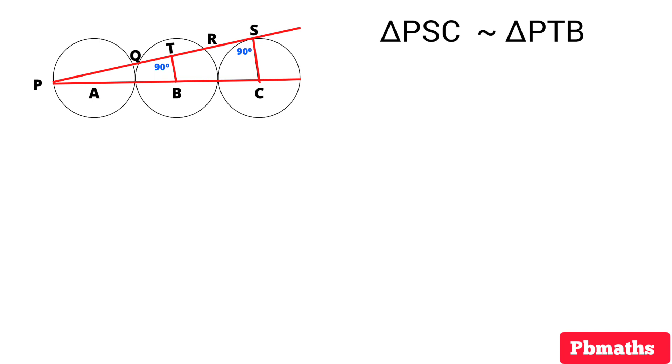So with the help of Thales theorem, we can write PC by PB equals SC by TB. We have the length of PC which equals 50 cm divided by length of PB equals 30 cm equals the length of SC which is the radius of the circle which equals 10 divided by